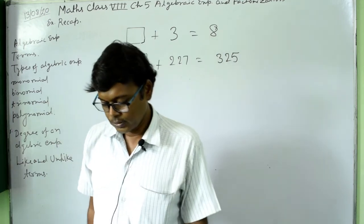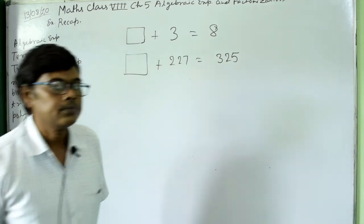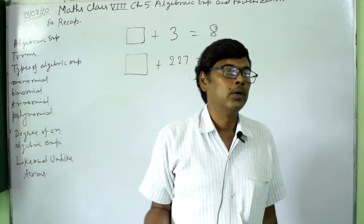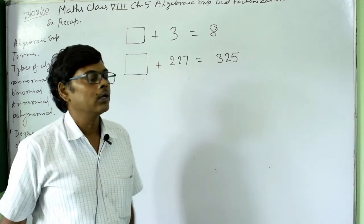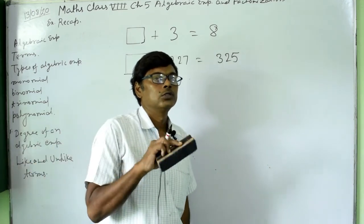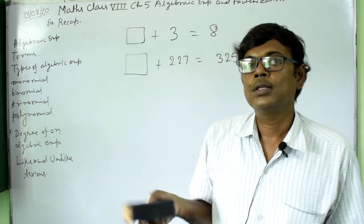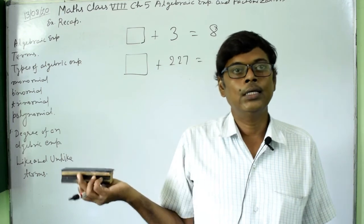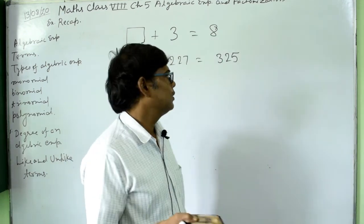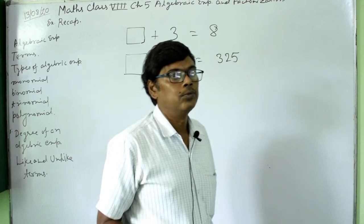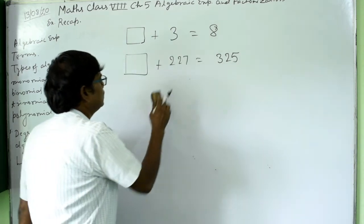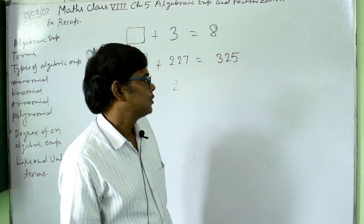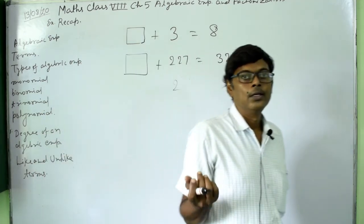So in place of the box, we write some unknown symbol. Actually, everything is a symbol — this 2 is also a symbol, 3 is also a symbol. All these are symbols like a, b, c, d. We know the meaning of each symbol. When we write 2, we pronounce it as 'two', meaning two things.